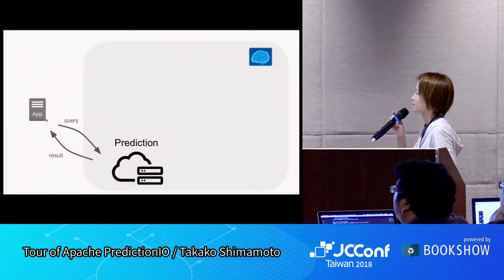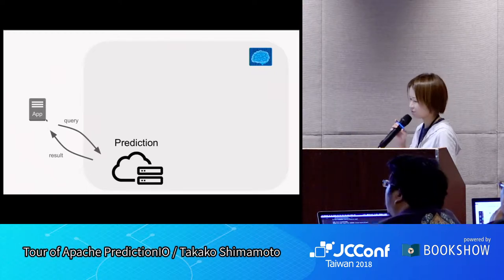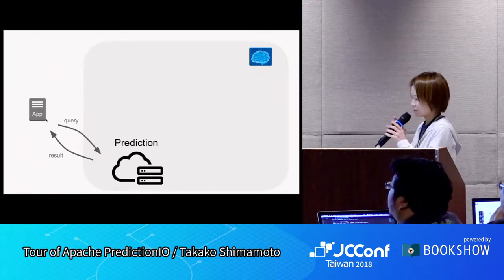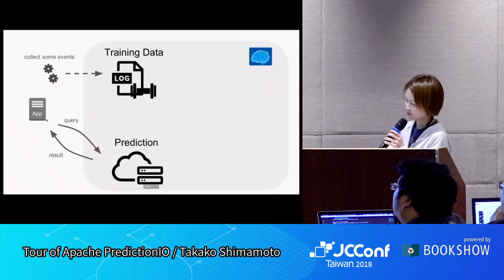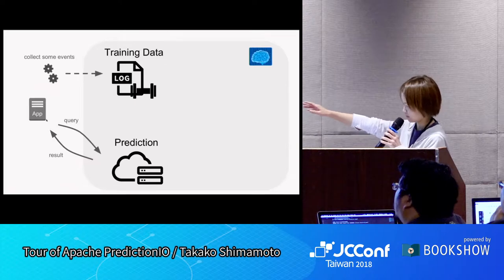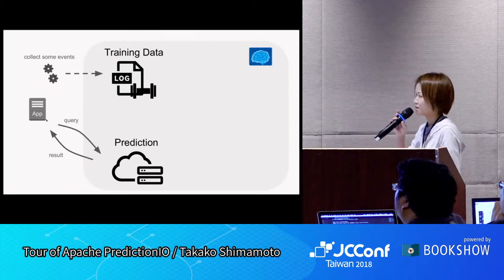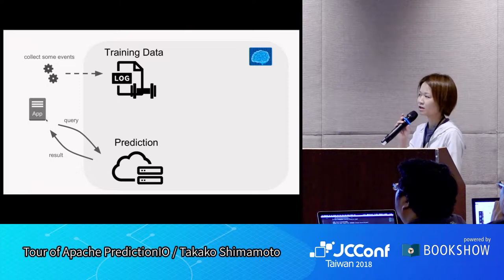Here goes the main part. Machine learning developers have a lot of things to do. First, collect and store arbitrary events as training data. For example, the user Bob buys an item — iPhone 8.